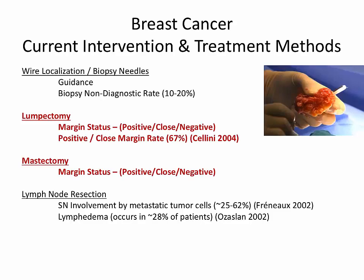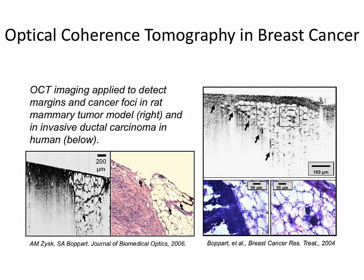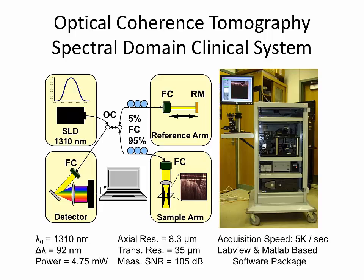We focused initially on the two applications of tumor margin status. Just like most of these studies, we started off in the lab with a lab-based OCT system at 800 nanometers, looking first at a tumor rat animal model. We can see very nice delineation between the cancer on the left side versus the normal adipose tissue on the right side. We then translated that into getting ex vivo specimens from humans, still with our lab-based 800 nanometer system. Next, we built a clinical spectral domain OCT system using an SLD centered at 1310 nanometers with a bandwidth of 92 nanometers, giving us an axial resolution of 8.3 microns and transverse resolution of about 35 microns. We can now take the system directly into the OR and do imaging right as the specimen is resected from the patient.